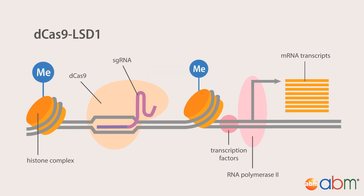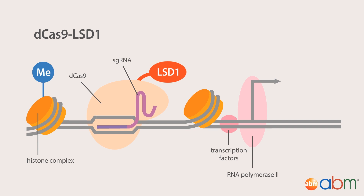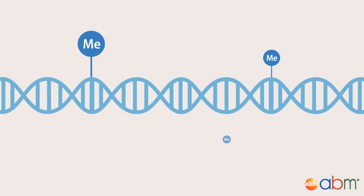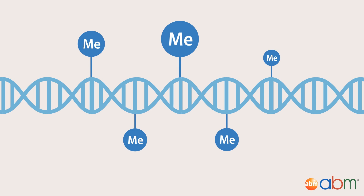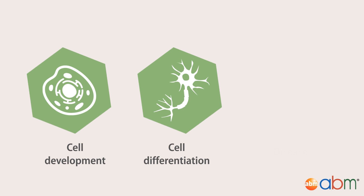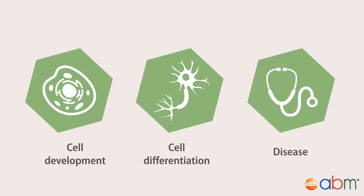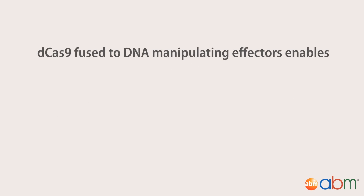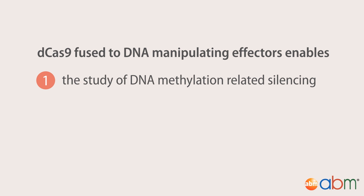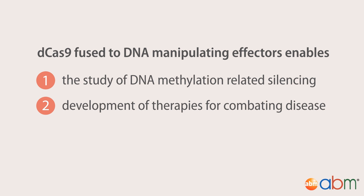When dCas9 is fused to the demethylase LSD1, it can demethylate histones near the target sequence. dCas9 fusion systems can also be used to introduce or erase DNA methylation. DNA methylation controls everything from cell development to differentiation, and many diseases are associated with improper DNA methylation patterns.